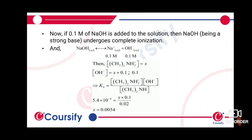After applying the approximation, the concentration of dimethylamine after dissociation is 0.02 − x ≈ 0.02, since dissociation is very low. Similarly, the OH⁻ concentration 0.1 + x ≈ 0.1.